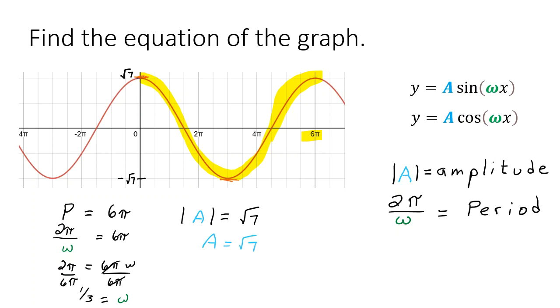All right now we can plug everything in. So we have y equals the square root of seven. And this is a cosine graph. Omega is one third and then we have it. So these are the steps that you would want to take. Just sort of one step at a time figure out those values and plug them in.